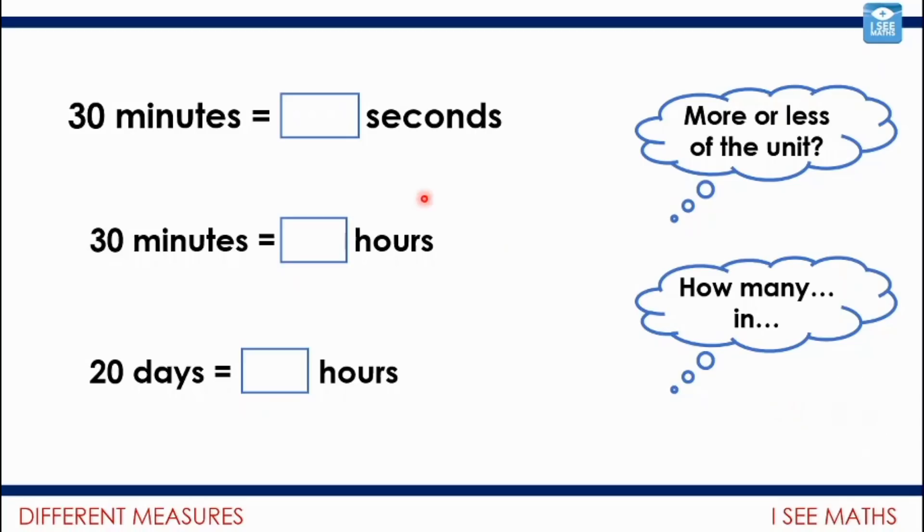Let's have a look. 30 minutes, how many seconds? It'll be more seconds because seconds are shorter. The conversion—60 seconds in a minute, so 30 times 60 is 1,800 seconds. 30 minutes, how many hours? Hours are a larger unit, so there won't be as many as 30. The conversion—minutes to hours is 60, so it'll be half an hour, 0.5 hours. We might just naturally know that. 20 days, how many hours? It'll be more hours because hours are shorter than a day. The conversion is 24—24 hours in a day—20 times 24 is 480.